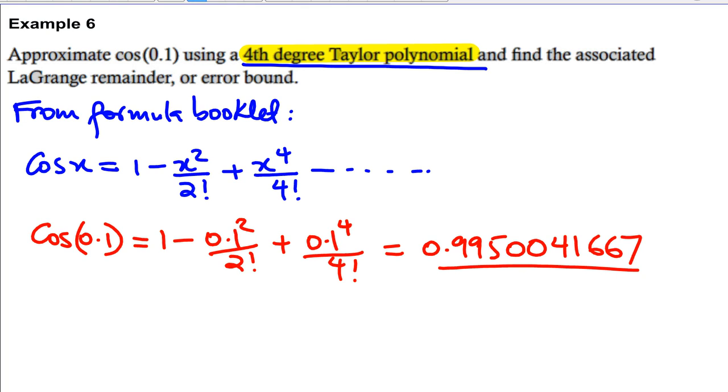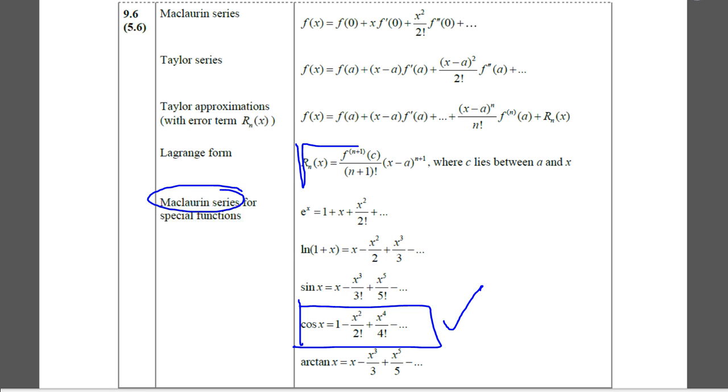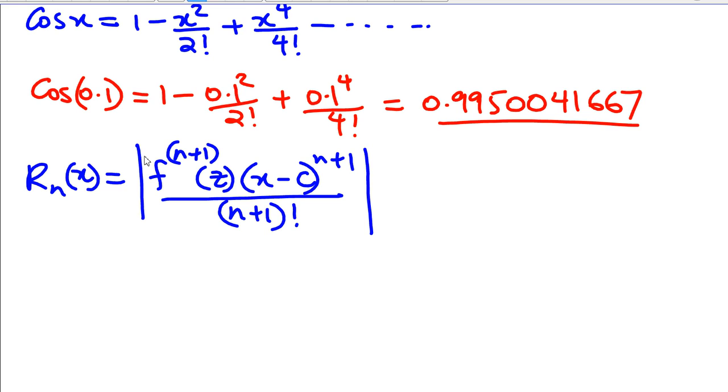Now, the next thing is, we want to find the associated error using the error term. So basically, the error term is given by, and this is in your formula booklet again. So that will be equal to, this is the magnitude of error. So the nth plus 1 derivative of F at z multiplied by x minus c to the power n plus 1 over n plus 1 factorial.